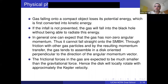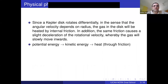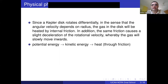The Keplerian disk formed around the supermassive black hole will tend to rotate differentially, meaning the angular velocity depends on the radius. Because of this differential rotation, gas closer to the supermassive black hole rotates faster than gas further away. This creates internal friction between the different layers, causing the gas in the disk to get heated.